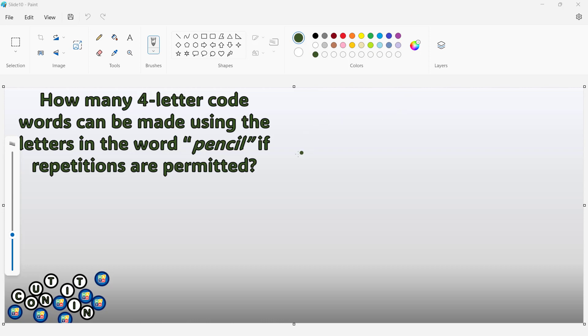So we have 4 different placements: 1, 2, 3, and 4, because we are asked to find the 4-letter code words. Now take note, we have 6 different letters for the word pencil: P-E-N-C-I-L.